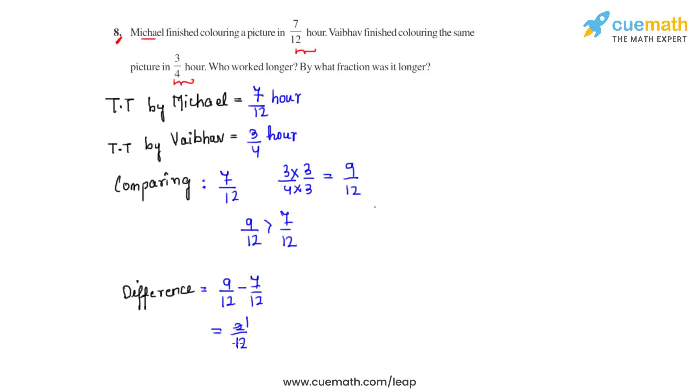Simplifying it, 2 ones are 2, 2 sixes are 12. We get the answer as 1 over 6 hours or hour longer.